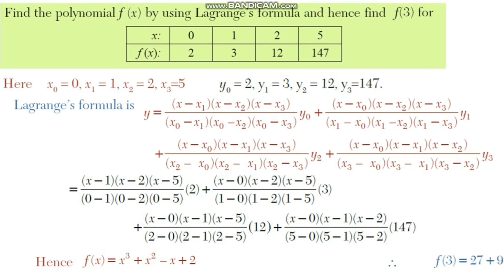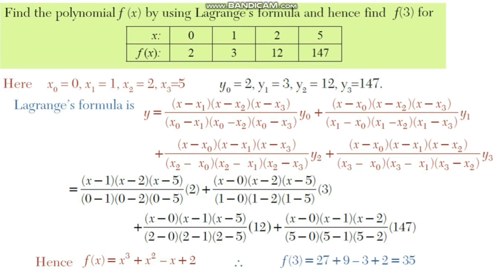After substitution and simplification, we obtain the required polynomial for the given discrete data: f(x) = x³ + x² minus x plus 2. Therefore, f(3) = 27 + 9 minus 3 plus 2 = 35. Hence, f(3) = 35.